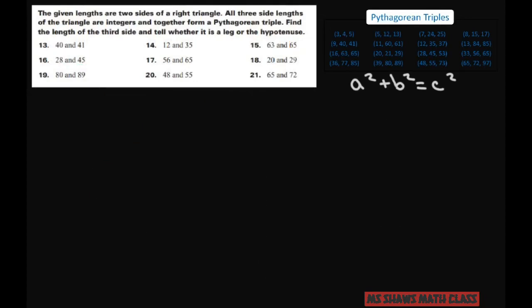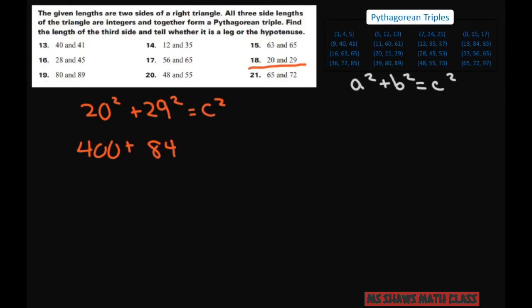Let's try this one — these numbers are kind of far apart. Let's try 20² + 29² = c². So 20² = 400, and 29² = 841. Adding those gives 1,241 = c². Taking the square root gives a decimal, so that means it's not a perfect square — I did it wrong.